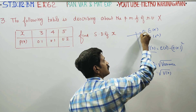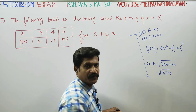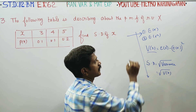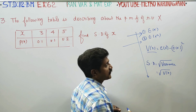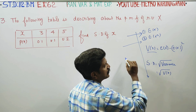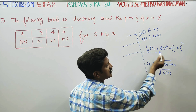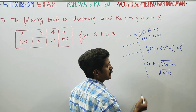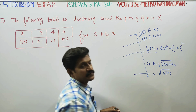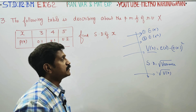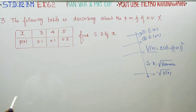Step 1: Find expectation of X. Step 2: Find expectation of X squared. Then use the variance formula, then use the standard deviation formula — the sum is ready. Fine.